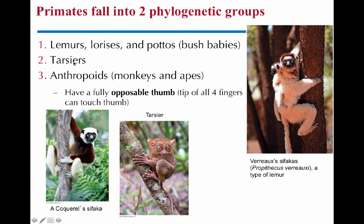Then there are the tarsiers, and then the anthropoids, which include both monkeys and apes. The thing that monkeys and apes have that's different from the other two groups is an opposable thumb — meaning like your thumb, you can touch all four of your other fingers with it. Groups like the lemurs and tarsiers can't do that, but the anthropoids can.